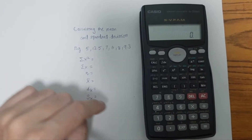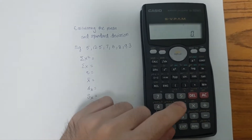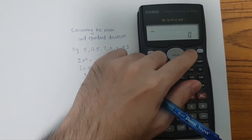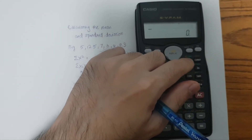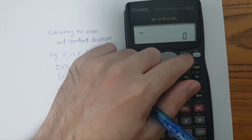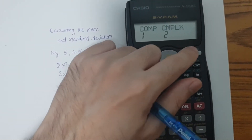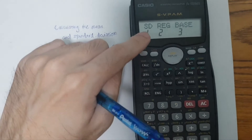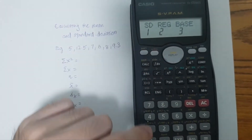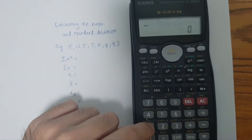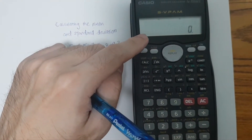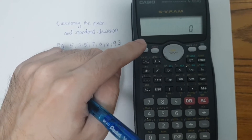To perform this calculation, we have to switch the mode of the calculator. You will see SD — select number one, and then the calculator will switch to the standard deviation mode, or the statistic mode.